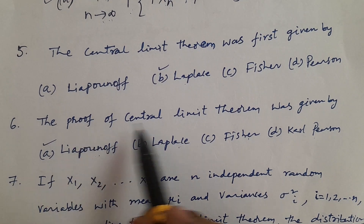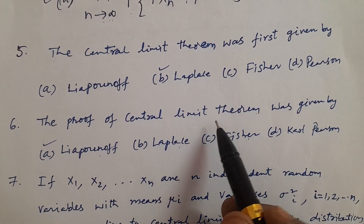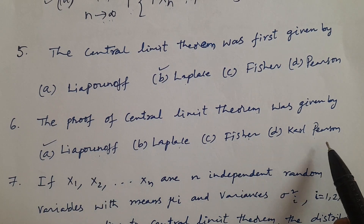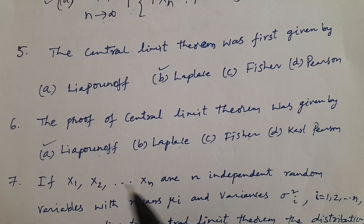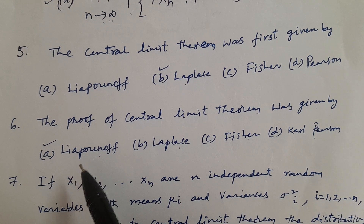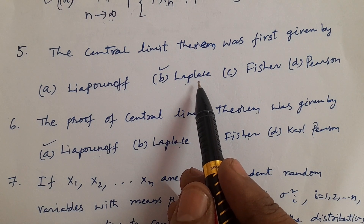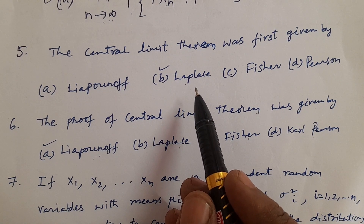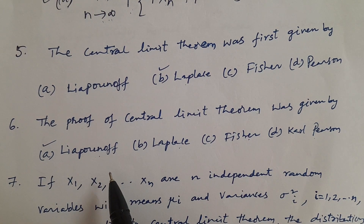Now in Telugu: The proof of the central limit theorem was given by — central limit theorem ka proof evaru chesaru? Options: Liapunov, Laplace, Fisher, Carl Pearson. Answer: Liapunov. Central limit theorem iddaru statisticians tayinaru. Laplace first ga specify chesadu, taravata Liapunov dani prove chesadu.